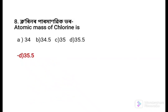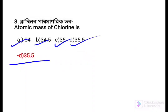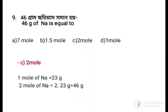Next question: The atomic mass of chlorine is — Option a: 34, Option b: 34.5, Option c: 35, Option d: 35.5. The answer is Option d: 35.5.